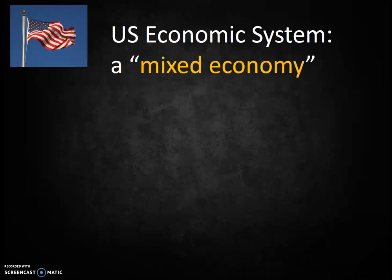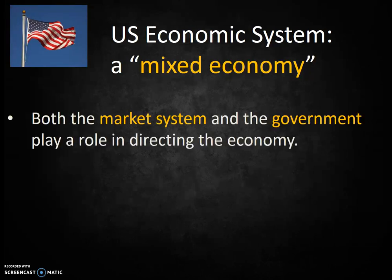Let's take a look at the United States economic system. Officially, our economic system in the US is a mixed economy, where both the market system and the government play a role in directing the economy. There are many countries around the world that have mixed economies, and they all operate in a slightly different manner. In our case, in the United States, the means of production are privately owned and market forces drive the economy. Profit-seeking businesses and the individual's desire to accumulate capital are the motivating forces. The government's role is to develop fiscal and monetary policies to do things such as help control unemployment, provide some social safety nets, and prevent widespread economic downturns.